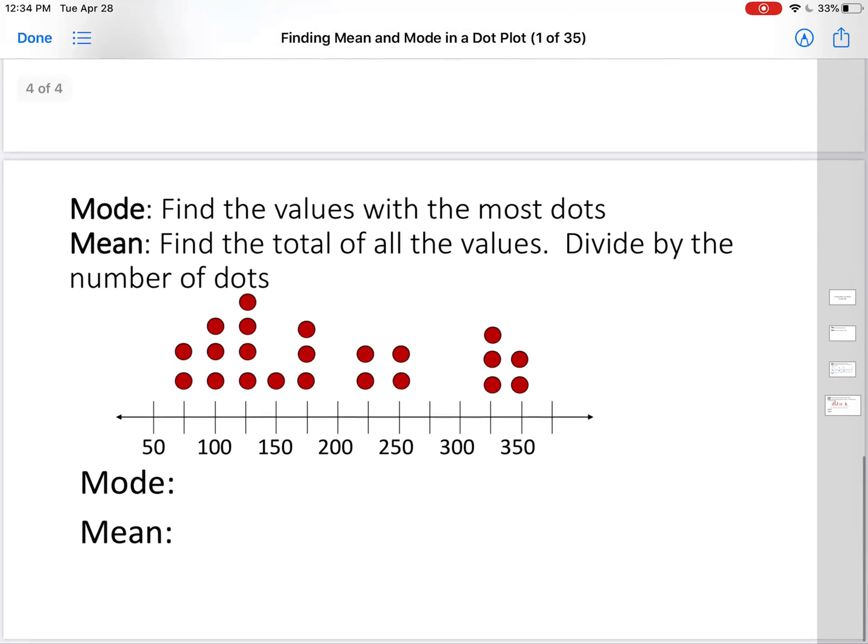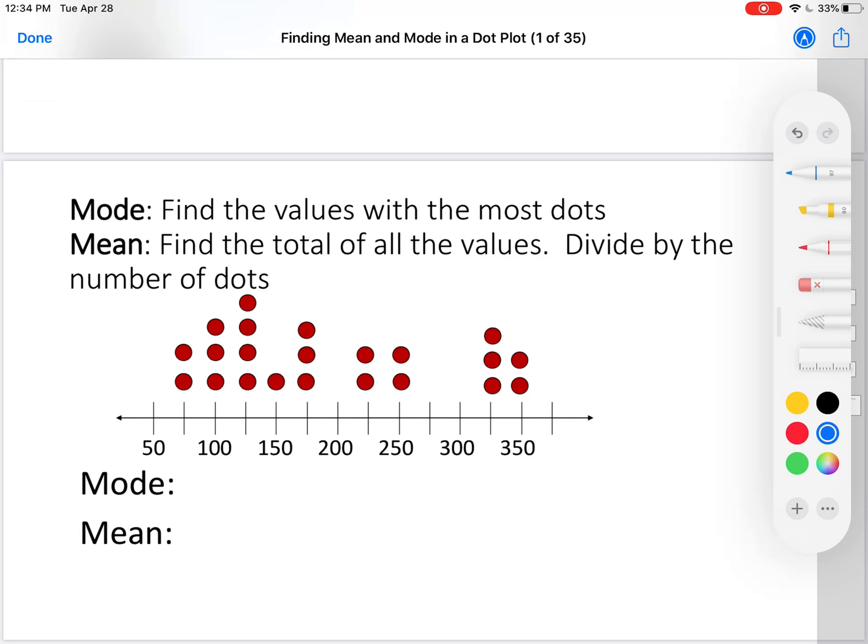Let's do another example. Which one has the most dots? It's this one. Nothing else has four dots. That's the most dots. So the mode is 125, because halfway between 100 and 150 is 125.